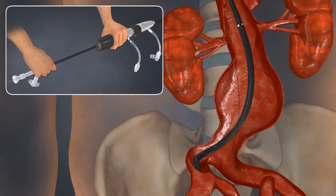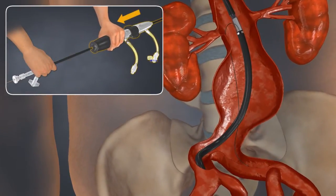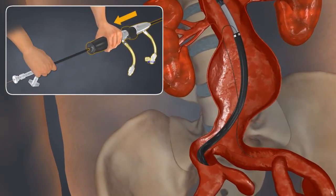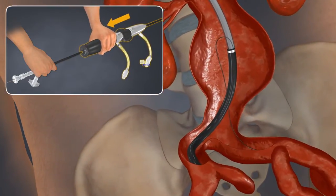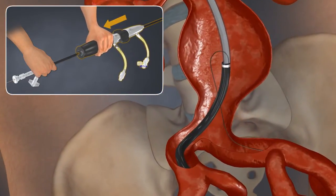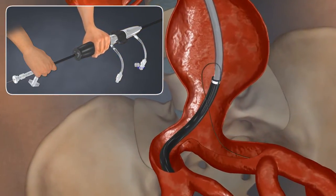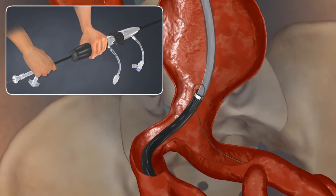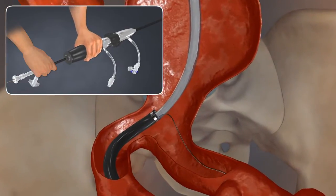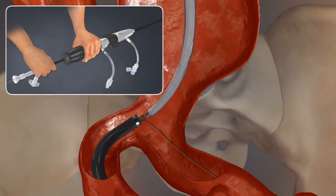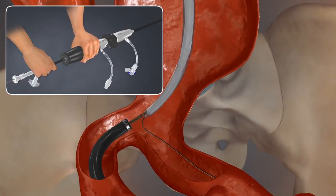Pin the inner core and pull back on the delivery system handle. This motion exposes the covered stent graft. Continue pulling the delivery system handle until the end of the introducer sheath is just below the aortic bifurcation.